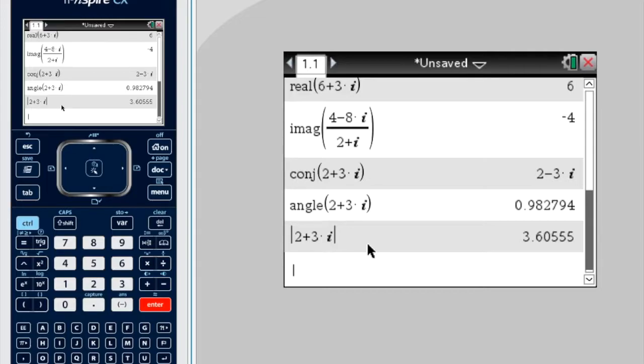So, if I just use approximates for a second, writing 2 plus 3i in mod arg form would be like 3.6 outside of cos of 0.98 plus i times sine of 0.98.